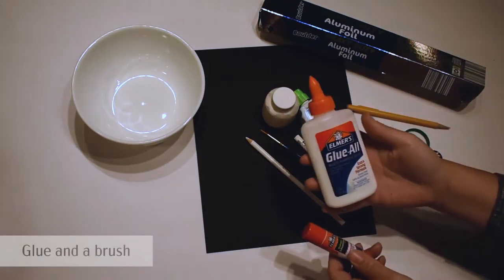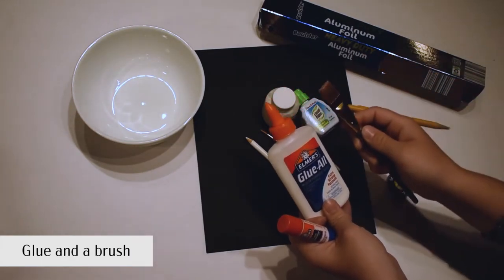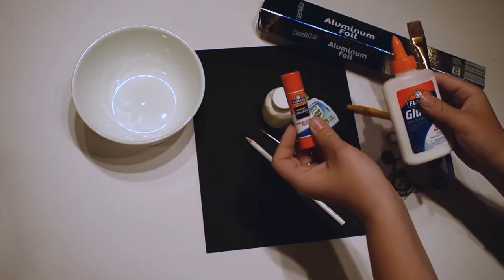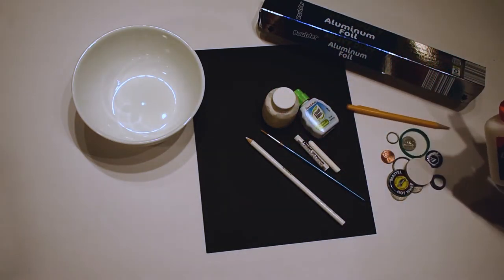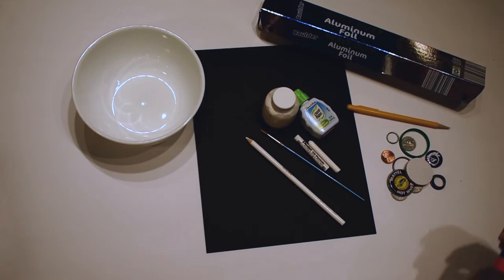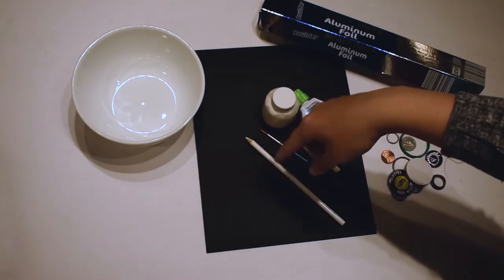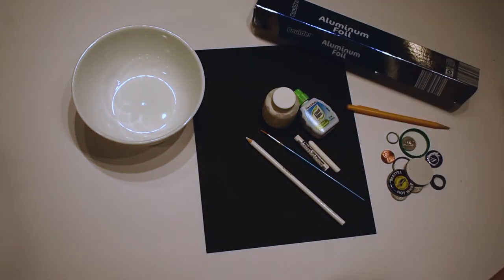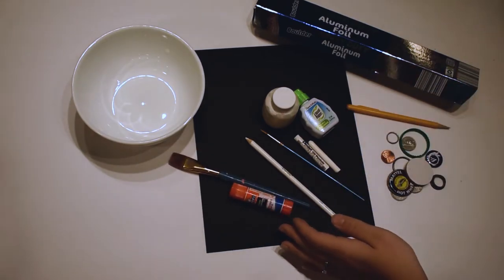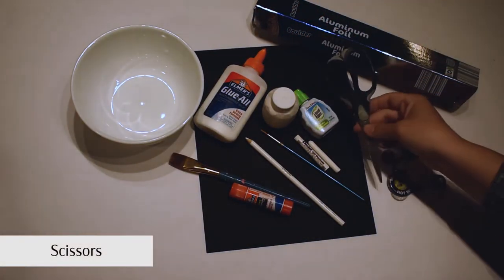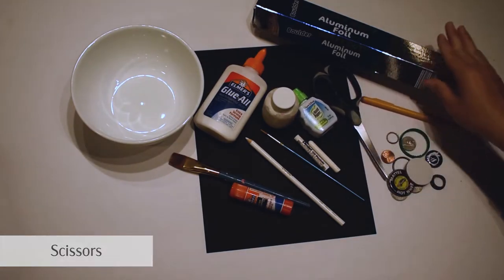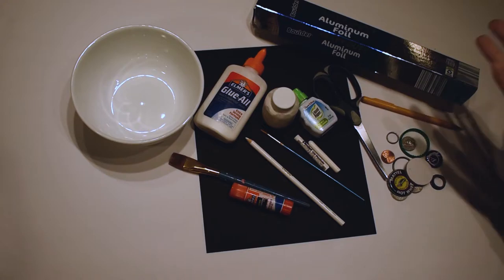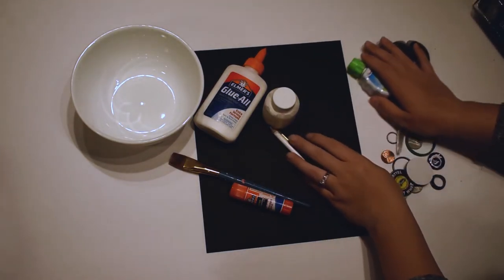You also need glue. I'm going to be using liquid glue and a brush if you have one lying around. You can also use your finger to spread the glue. I found this works the best. Glue stick works fine too. You could use hot glue. Hot glue could be kind of cool if you put different designs behind it because it will show when you put the foil down. But I'm going to be using just liquid glue. You also need scissors. So this is all the stuff you need. Hopefully you have that lying around somewhere in your house. And let's get started.